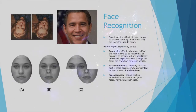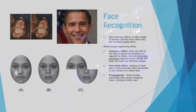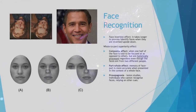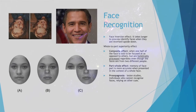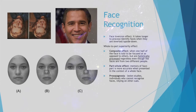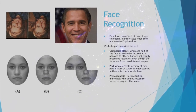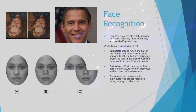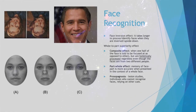Face Recognition. Cognitive psychologists recognized several effects, such as the face inversion effect, whereby it takes longer to process or identify faces when they are inverted or upside down. There is also a whole-to-part superiority effect, including the composite effect, where one half of the face is focused on but faces are holistically processed regardless, even when the faces are from two different people.